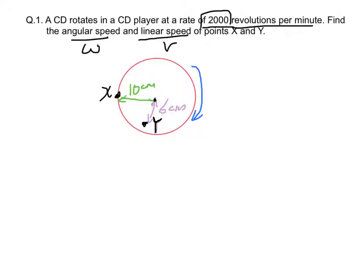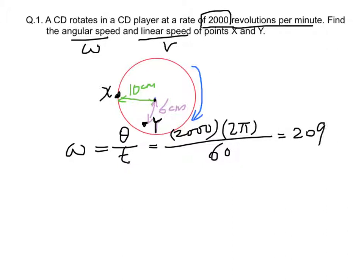Angular speed is given by omega equal to angular displacement over time, which equals 2,000 times 2π over 60, which is equal to 209 radians per second.